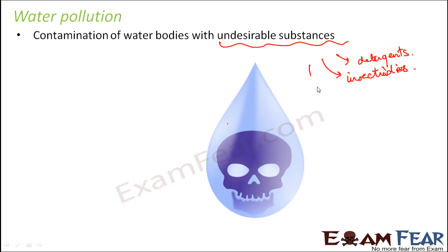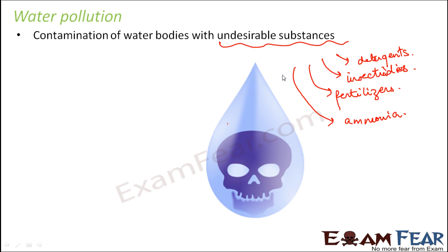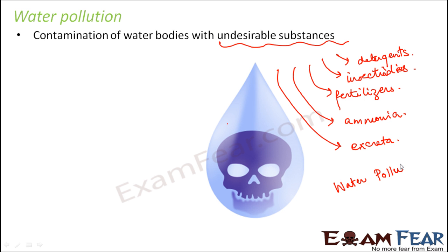We often use insecticides, pesticides, and fertilizers, which are basically chemicals. When you mix chemicals with water, the water is no more pure — it gets contaminated. It could also be strong elements like ammonia. Sometimes even excreta gets mixed with water, as seen in many pilgrimage places in India where people pass urine or excreta into water bodies, dumping waste materials into the water and polluting it. All these undesirable substances are called water pollutants.